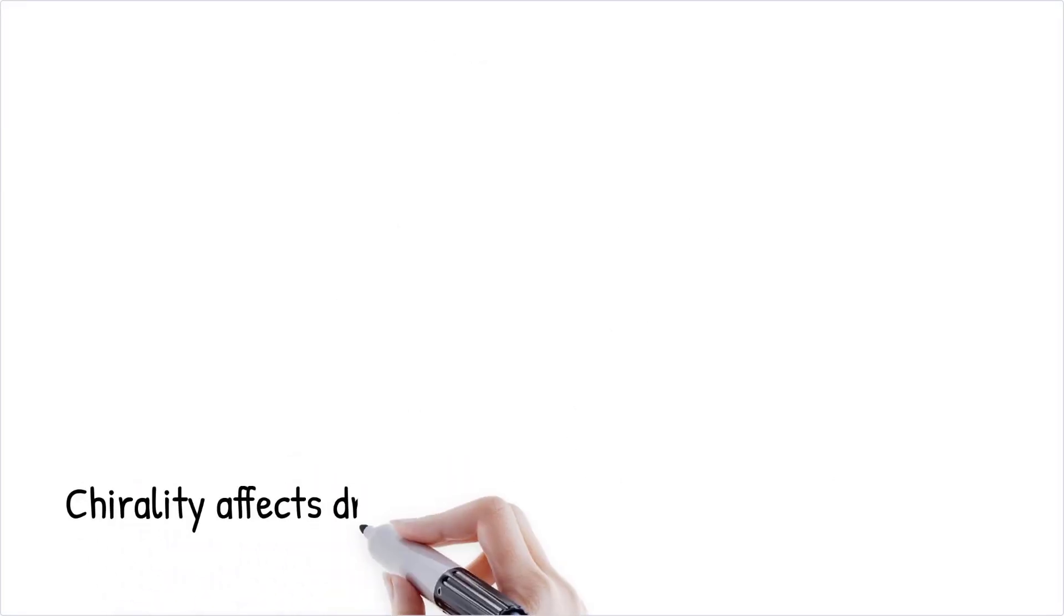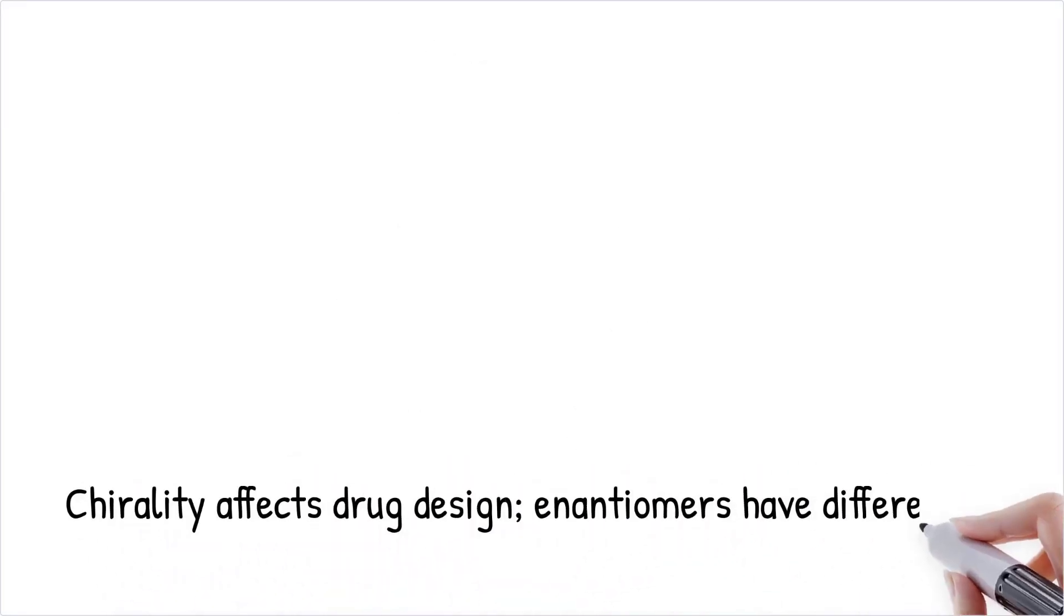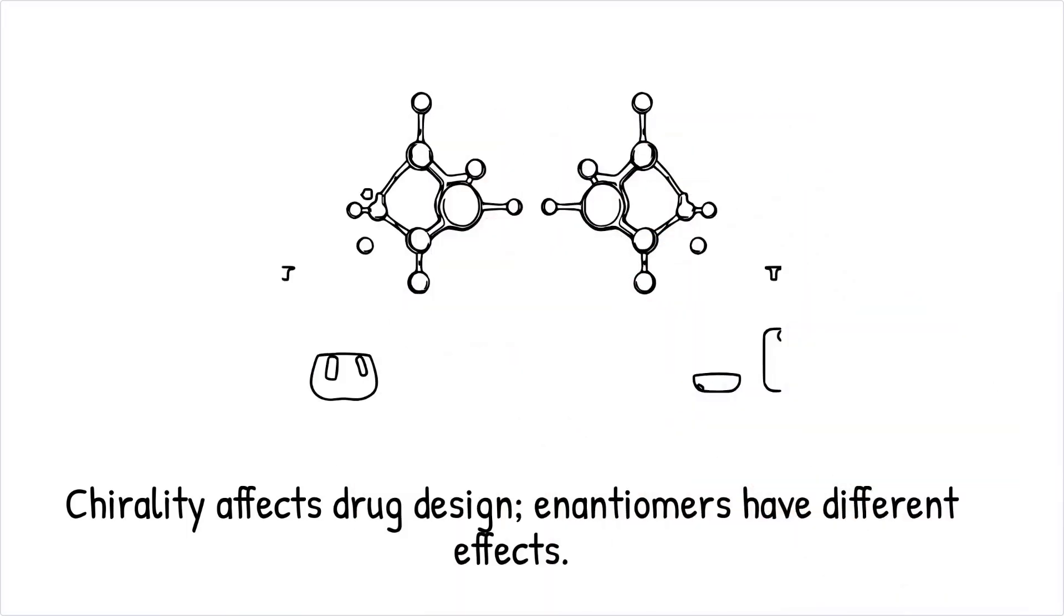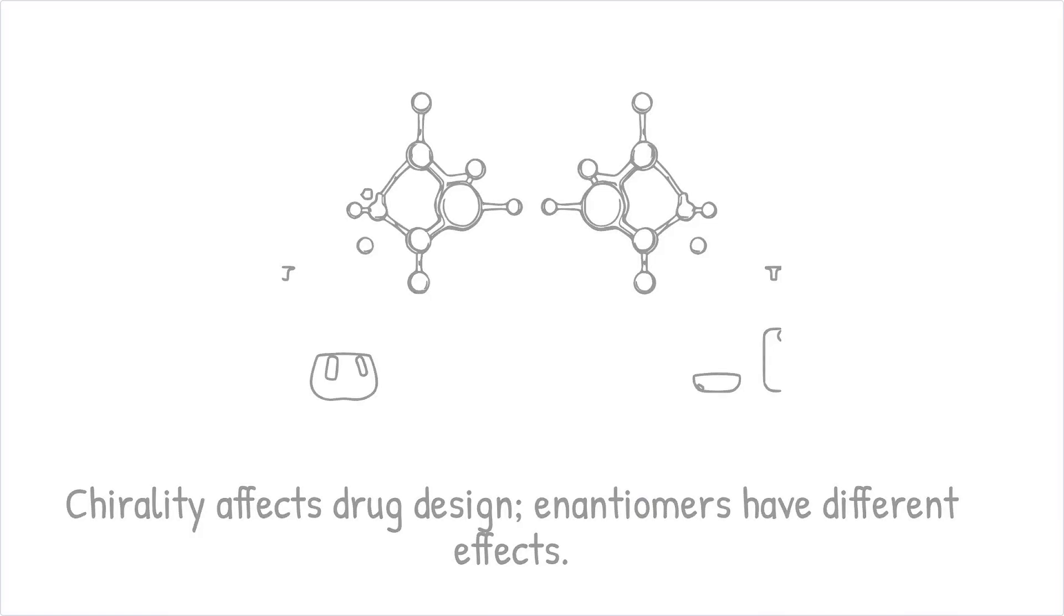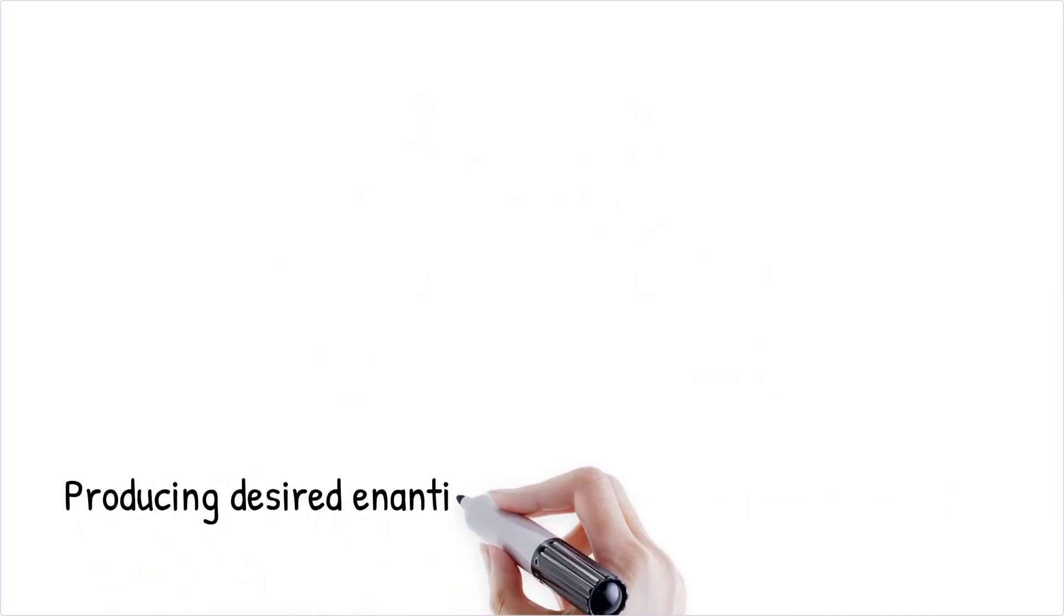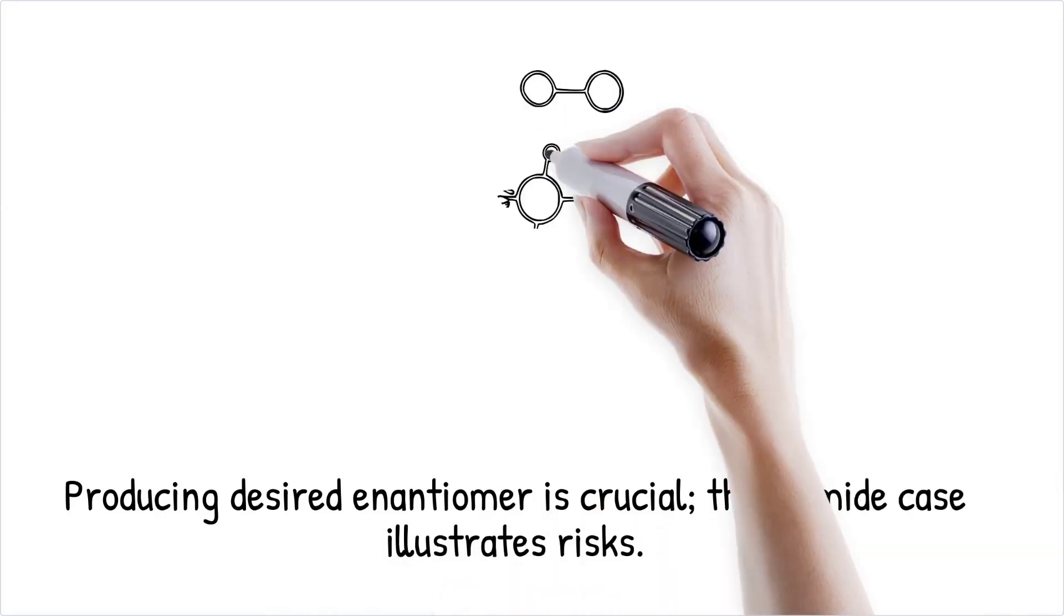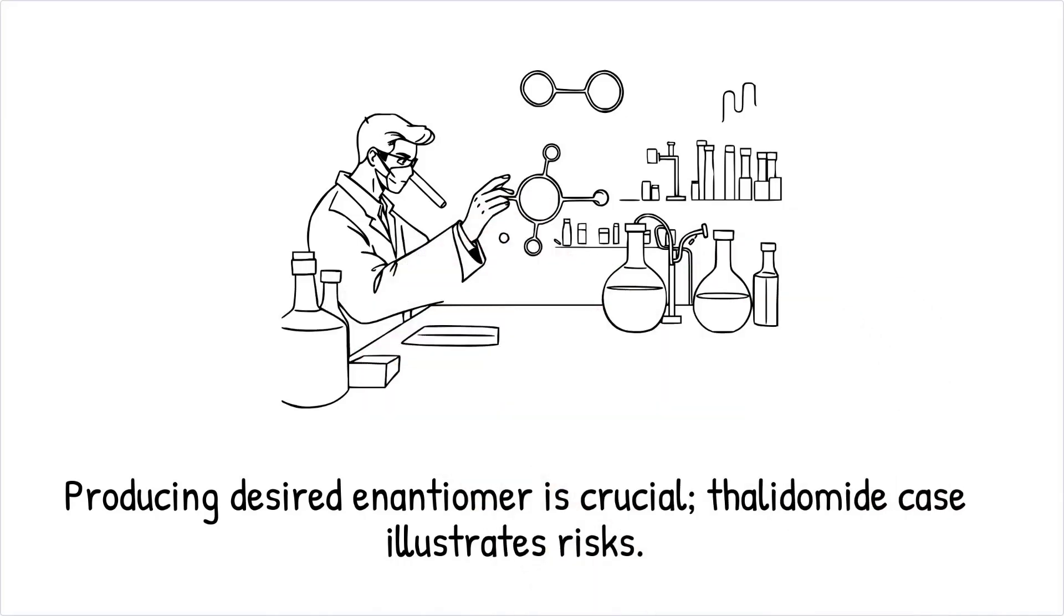Chirality has significant implications in medicine and drug design because the two enantiomers of a chiral molecule can have drastically different effects. One enantiomer may be therapeutic while the other could be inactive or even harmful. Pharmaceutical synthesis often focuses on producing only the desired enantiomer of a drug. Failure to do so can lead to serious consequences, as seen in the case of thalidomide, where one enantiomer treated morning sickness but the other caused birth defects.